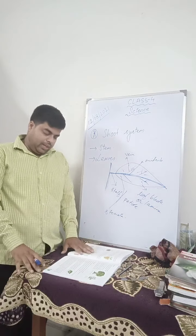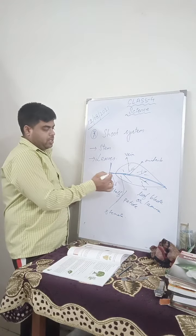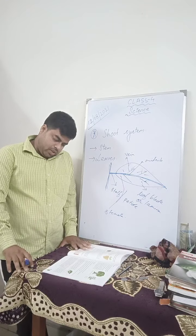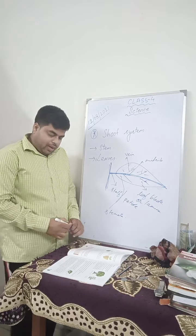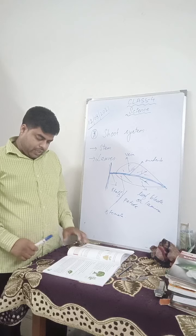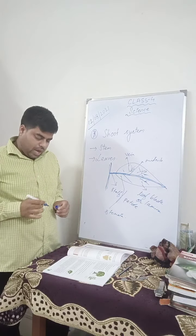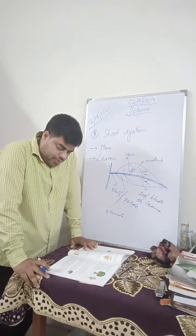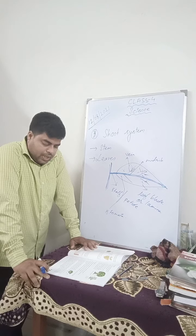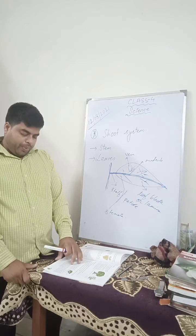The leaf blade or lamina is the flat and broad part of the leaf. The part that links the leaf to the stem is called the petiole or stalk. The central vein, called the main vein, runs along the leaf from the petiole to the leaf tip and divides the leaf into two parts. A number of tiny channels called veins run throughout the leaf, carrying water and minerals to all parts of the leaf. Small openings called stomata are present on the under surface of the leaf and help in the exchange of gases — they take in carbon dioxide and release oxygen.